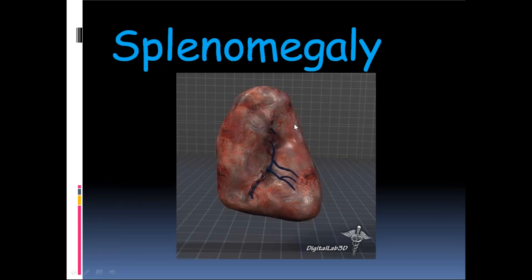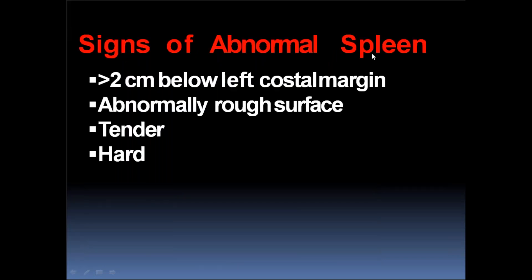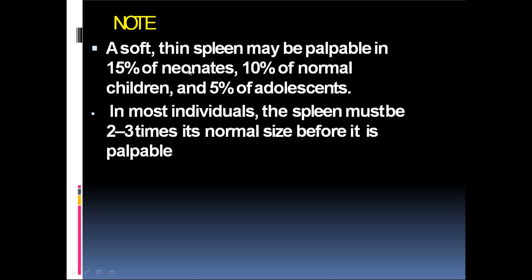Signs of abnormal spleen: more than 2 cm below the left costal margin, abnormally rough surface, tender spleen, and hard spleen are abnormal signs. Soft, thin spleen may be palpable in 15% of neonates, 10% of normal children, and 5% of adolescents. In most individuals, the spleen must be 2 to 3 times its normal size before it becomes palpable.